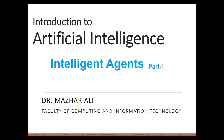An agent is anything that takes actions according to the information it gains from the environment. A human agent has sensory organs to sense the environment and body parts to act, while a robot agent has sensors to perceive the environment. Agents work on the basis of senses — we sense different things from the environment, learn from it, and act accordingly. The same principle applies to intelligent agents.